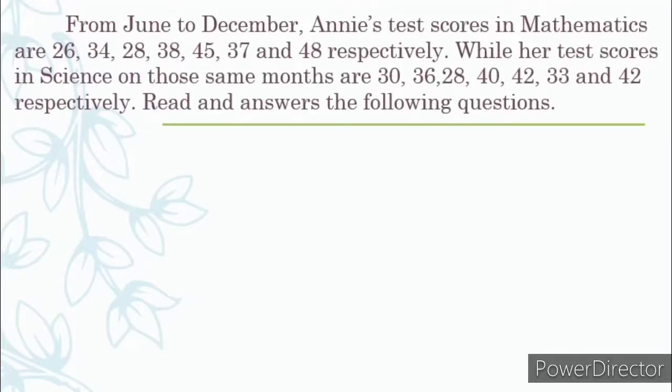At this juncture, we will create and interpret a table of this problem. From June to December, Annie's test scores in mathematics are 26, 34, 28, 38, 45, 37, and 48 respectively. While her test scores in science on those same months are 30, 36, 28, 40, 42, 33, and 42 respectively.